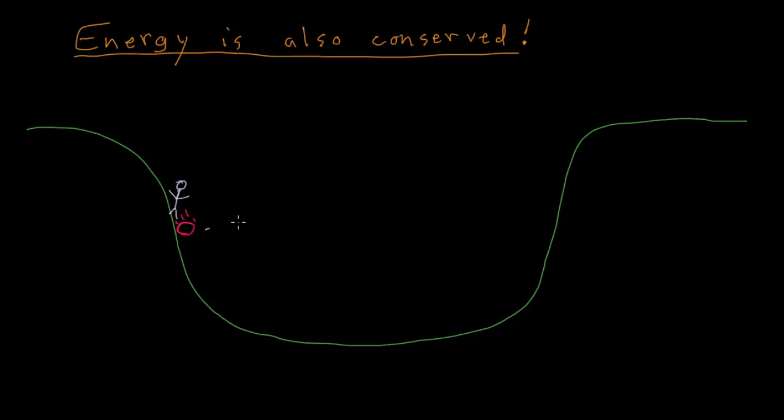Well the simplest thing we might say is that the ball will reach the same height as the height where I let it go. So the ball might reach right here. That's a reasonable guess about what might happen. Another reasonable guess might be that the ball won't quite make it up.